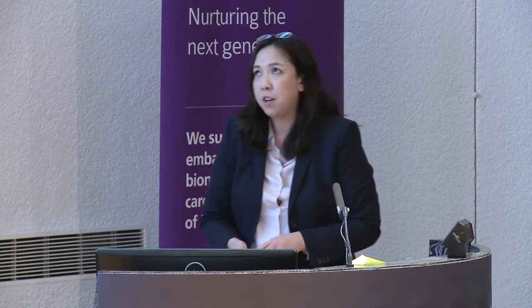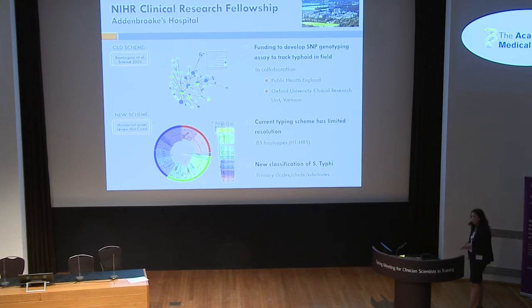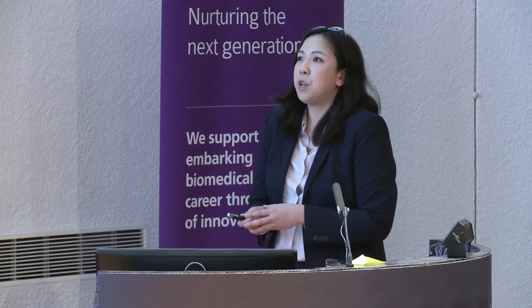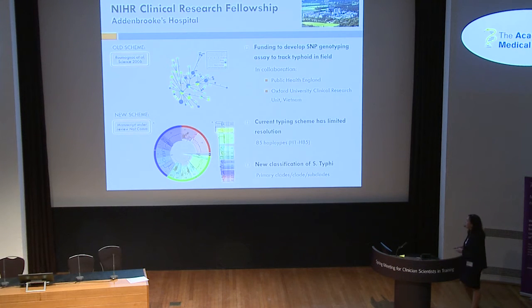This data formed the basis of an NIHR clinical research fellowship to develop a SNP genotyping assay to track typhoid in the field. Moving from Ruminak's low-resolution subgenomic typing to high-resolution whole genome sequencing, we reclassified typhi into four primary clades, 16 clades, and 49 subclades. This increased resolution will allow more accurate tracking of typhoid in the field. The updated scheme is currently under review in Nature Communications and we are working with Public Health England, with plans to test the assay in Vietnam with the Oxford University Clinical Research Unit.